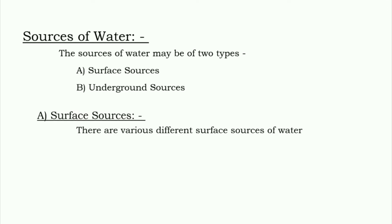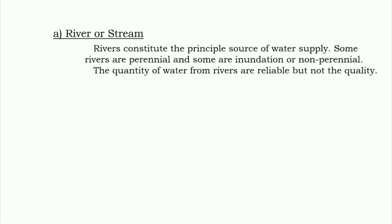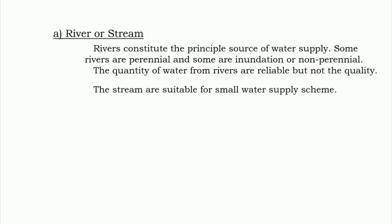Surface sources include rivers or streams, ponds or lakes, and storage reservoirs. Rivers constitute the principal source of water supply. Some rivers are perennial and some are inundation or non-perennial. The quantity of water from rivers is reliable, but not the quality. Streams are suitable for small water supply schemes.